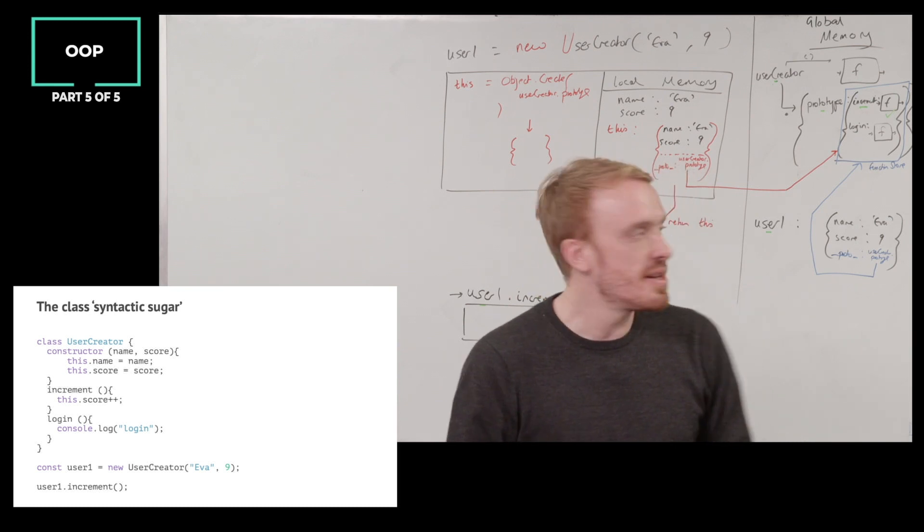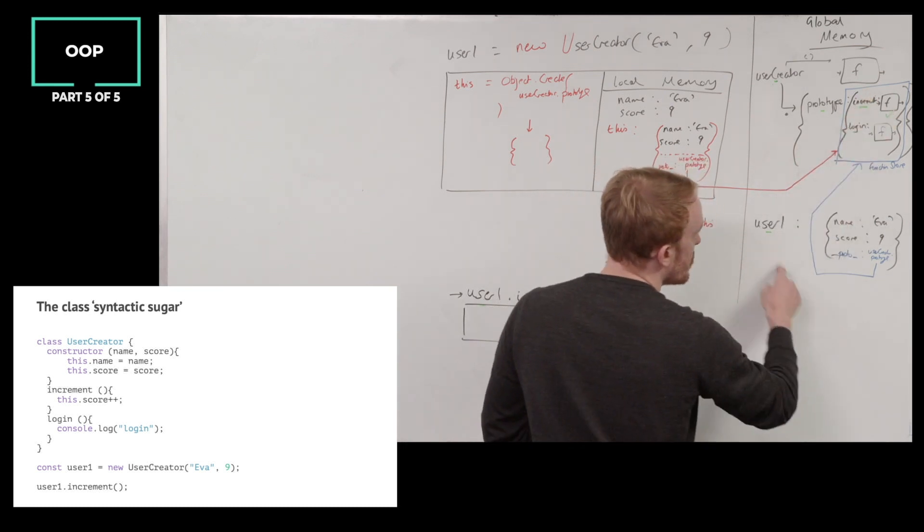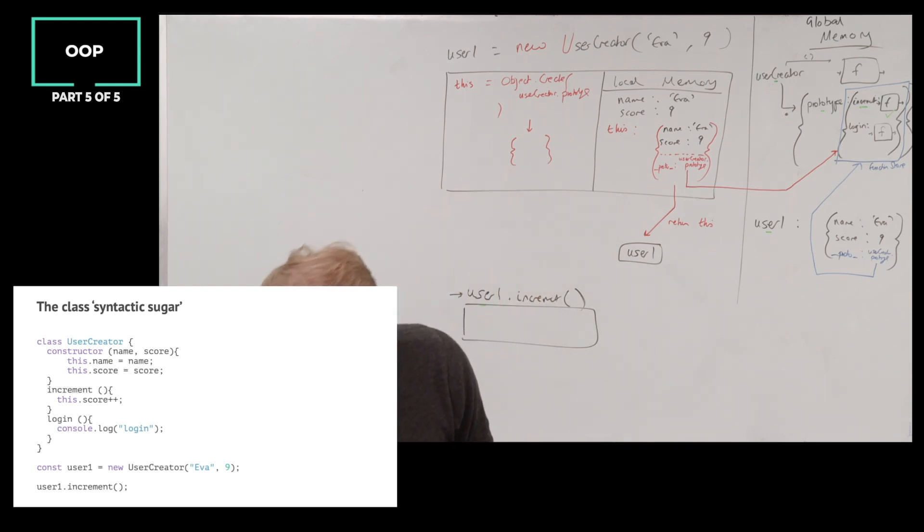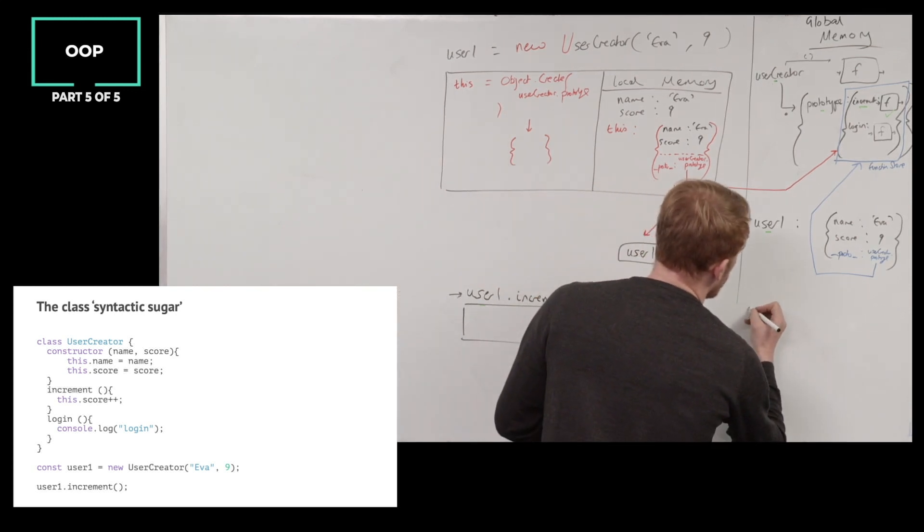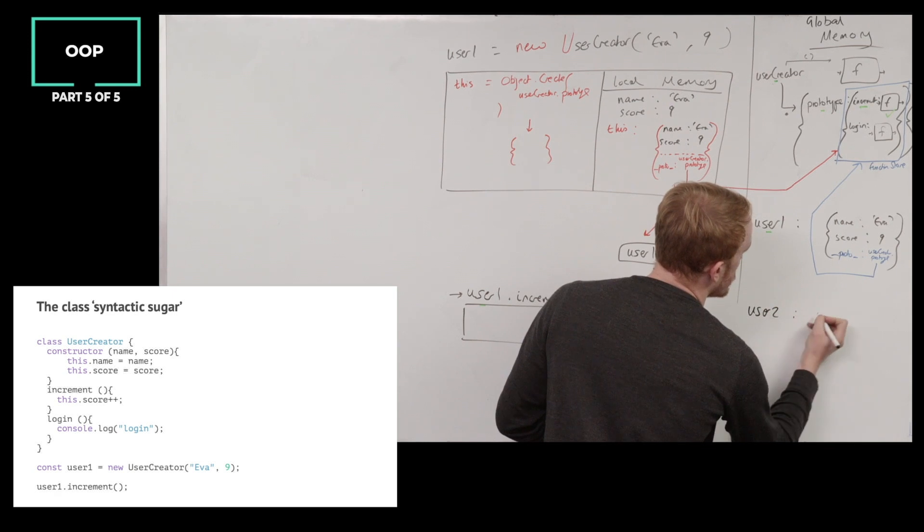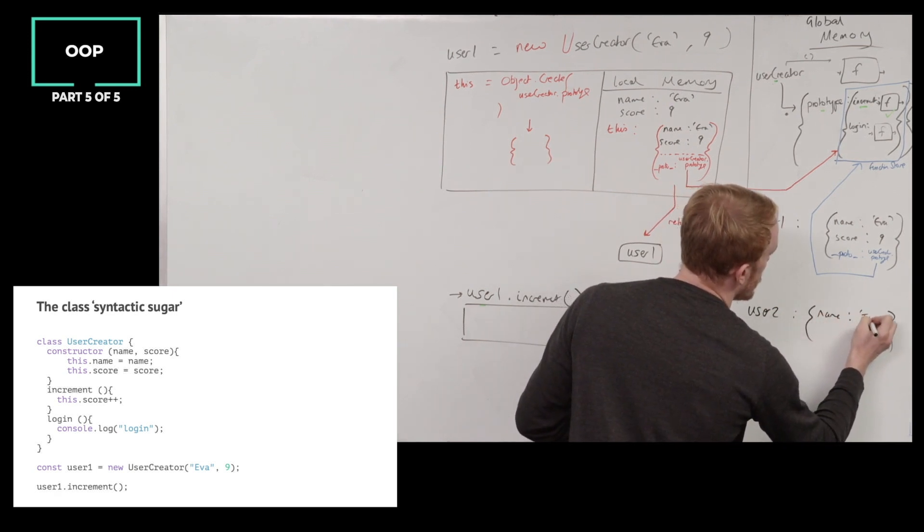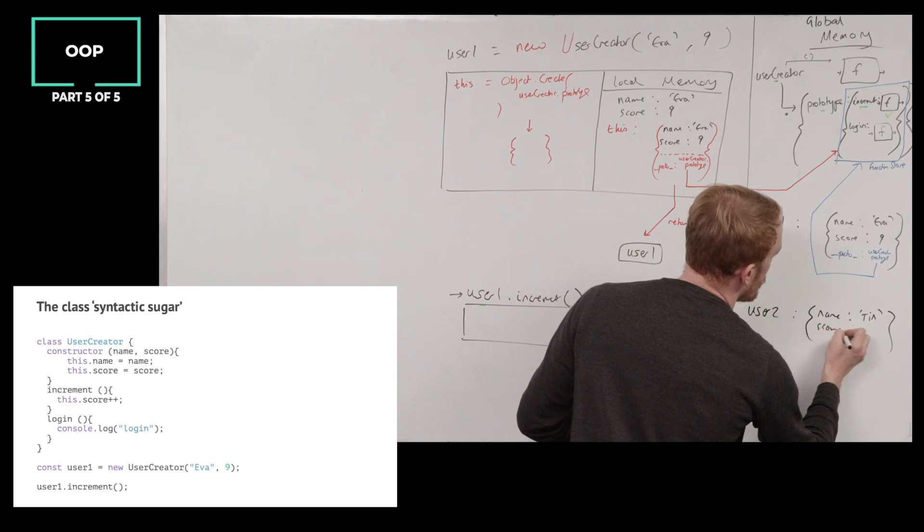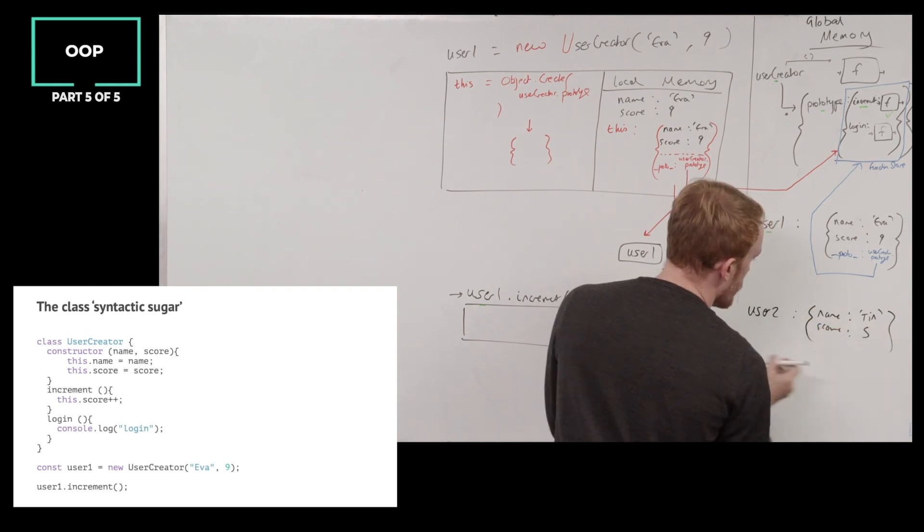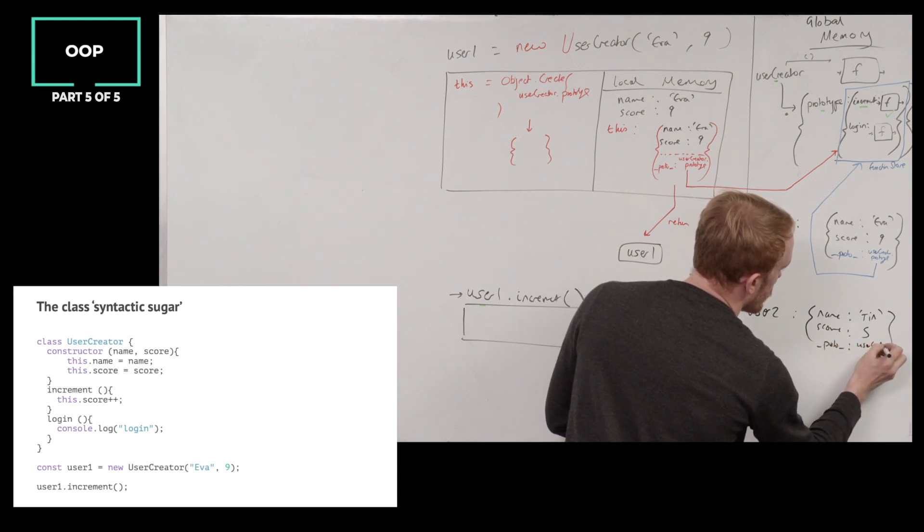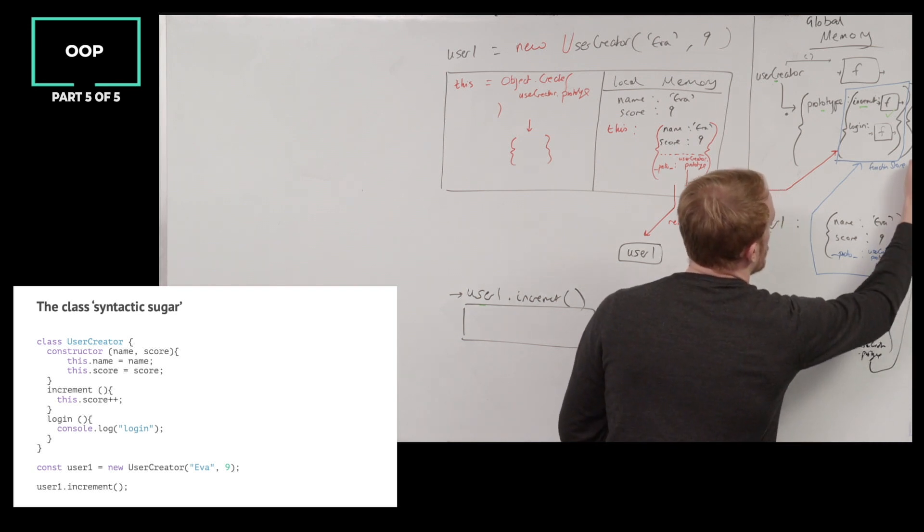In other languages, functions that are shared between all returned objects are not stored by hand separately. Let's just make sure we have our user 2. What do we do? Let's do our standard one, which is name, Tim, score, 5. And that would also have a proto reference to user creator dot prototype. This guy here. Okay.